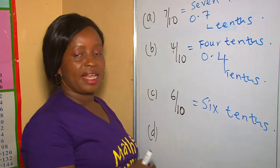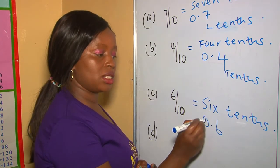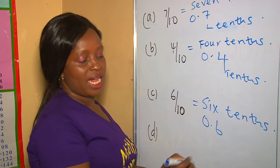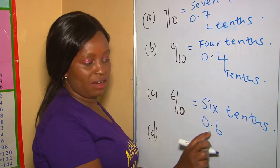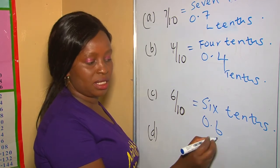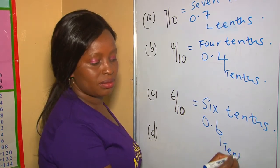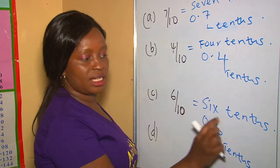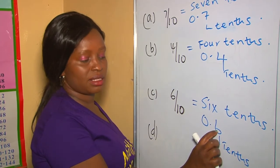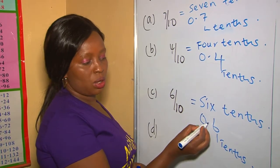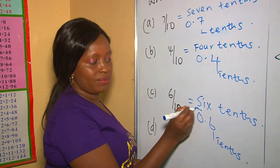The decimal is going to be 0.6, and the place value of six at the decimal place is tenths — that's why we say six tenths. These are six tenths.